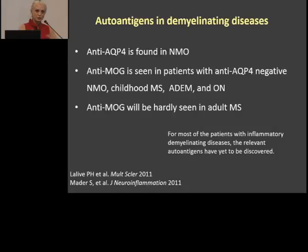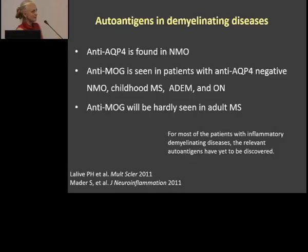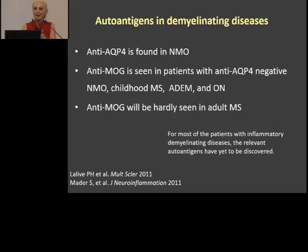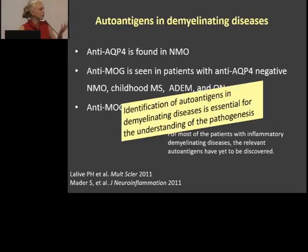There is a lot going on about these autoantibodies right now. Anti-aquaporin-4 is the test for NMO. Anti-MOG will be seen in aquaporin-negative NMO, and this patient group has better prognosis — in some childhood MS, in ADEM, and in optic neuritis. Anti-MOG will hardly be seen in adult multiple sclerosis. So all three tests have to be done at the same time: oligoclonal bands for MS, anti-MOG, and anti-aquaporin-4. The combination will tell you which disease you are actually dealing with.